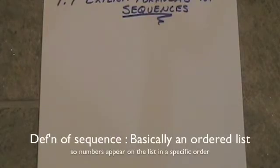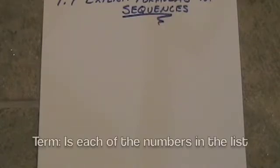Informally, it's an ordered list. So numbers appear in the list in a specific order, and each one of these numbers in the list is called a term.